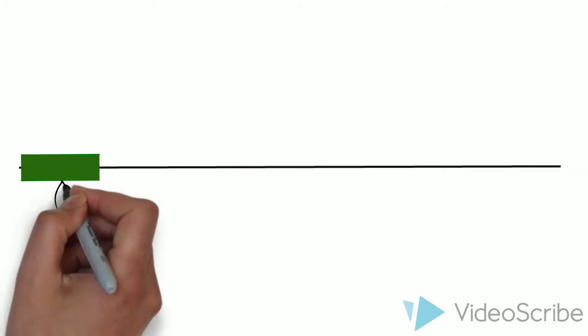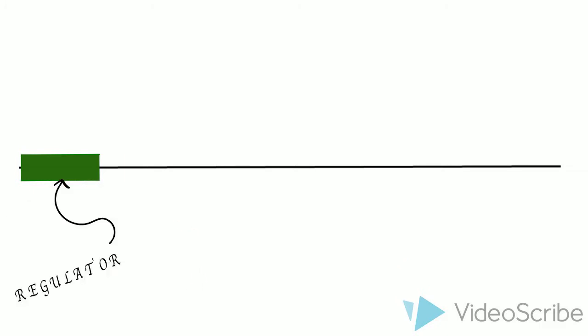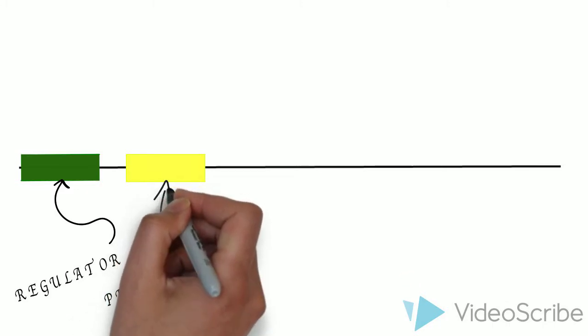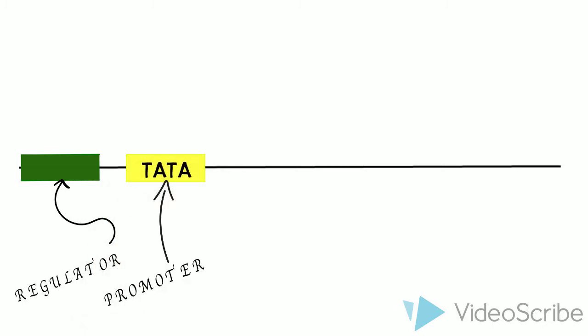First, there is the regulator gene. It contains the code that produces the repressor, which will be explained momentarily. Next, we have the promoter, or TATA box. This is the site where RNA polymerase will bind and it signals the start of the gene that is trying to be translated.